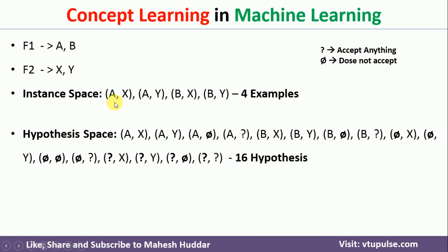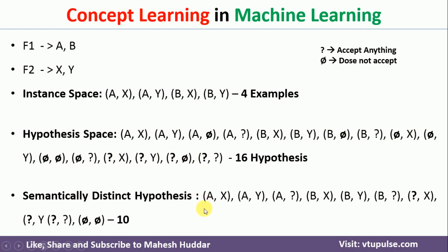Notice that in our instance space we don't have any nulls. So if we have a null in hypothesis space, it is actually not possible — having null in hypothesis space is meaningless because we have no matching instance. So rather than writing all those nulls separately, we take one representation of null and remove the remaining ones. There are 7 null hypothesis combinations; we remove those 7, leaving 16 − 7 = 9, then add back 1 null-null representation, giving us 10.